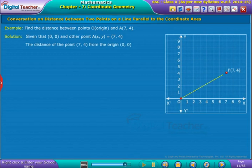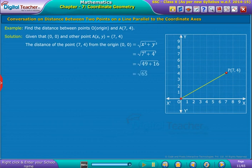the distance of the point (7, 4) from the origin (0, 0) is root x square plus y square, which is equal to 7 square plus 4 square, that is root 49 plus 16, which is equal to root 65. Therefore, we obtain distance between two points as root 65.